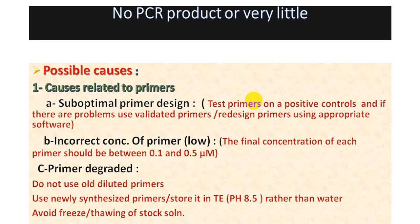What are the possible causes of no PCR product or very little product? Cause number one is related to primers: suboptimal primer design. How can we know this is the reason for the problem? Test the primer on a positive control. You should test the primer on a positive control, and if there are problems, validate the primers or redesign them using appropriate software.